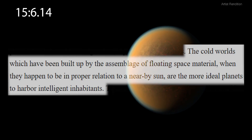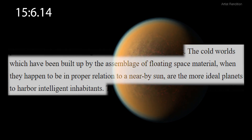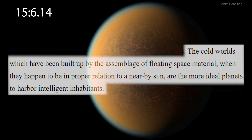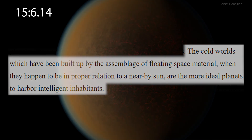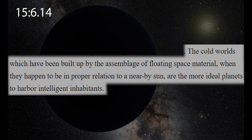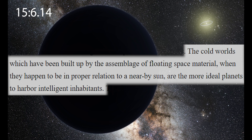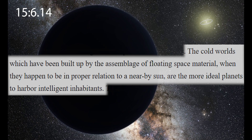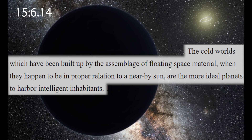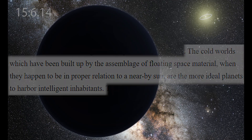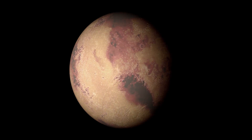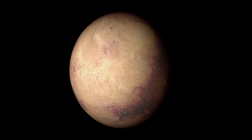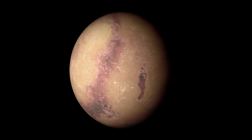The cold worlds which have been built up by the assemblage of floating space material, when they happen to be in proper relation to a nearby sun, are the more ideal planets to harbour intelligent inhabitants. Inhabited worlds formed in interstellar space — how is that possible?